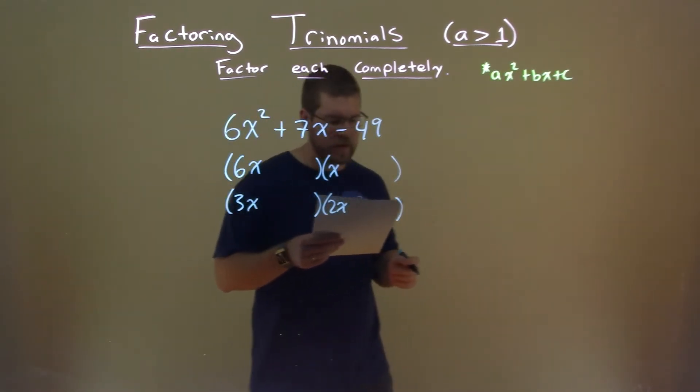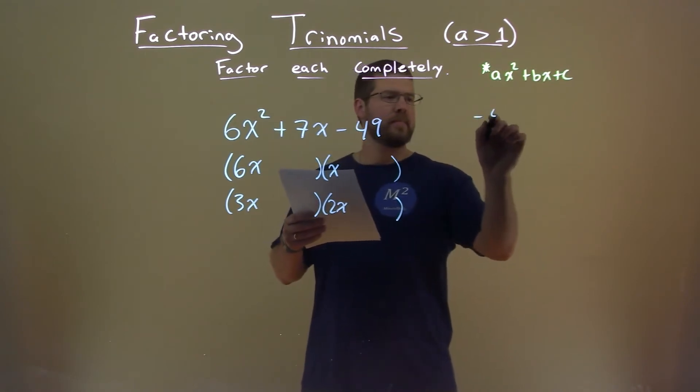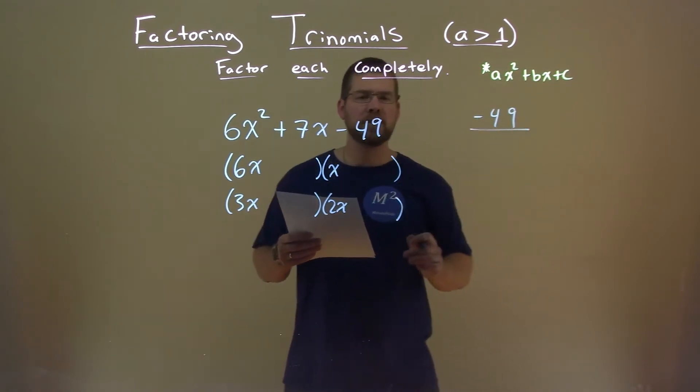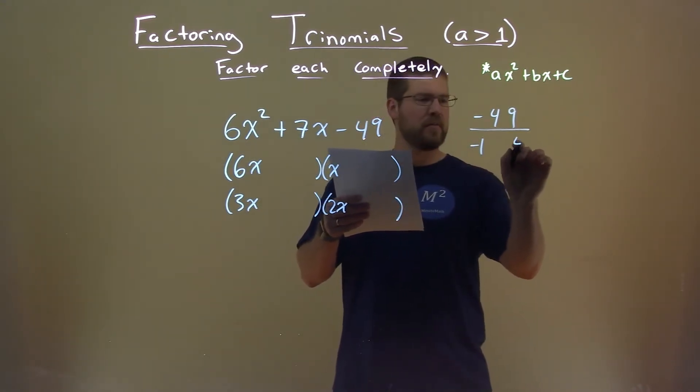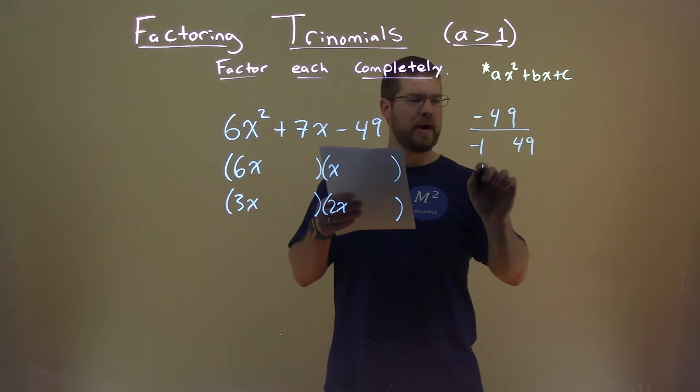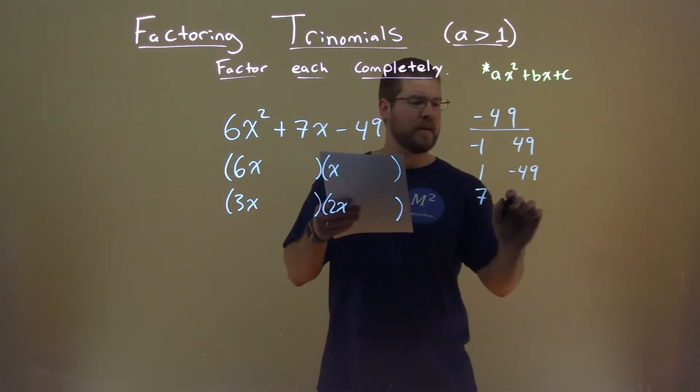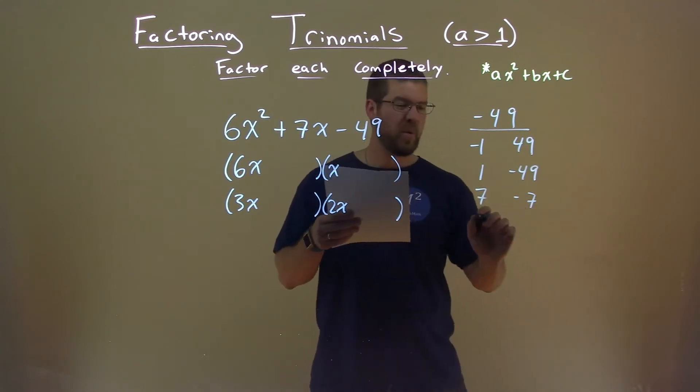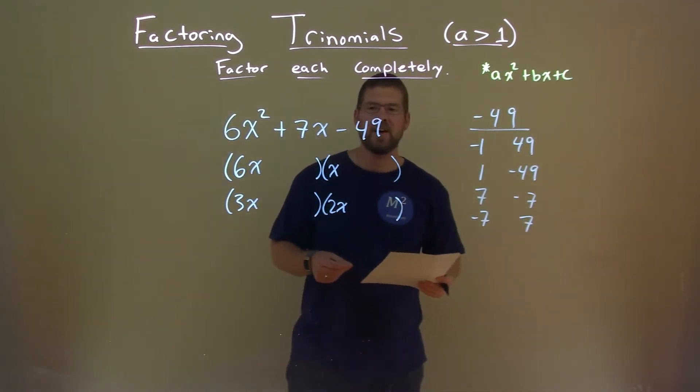Now let's look at negative 49. So we have negative 49 right here, and we think, okay, what two numbers multiply to be negative 49? Well, that's either negative 1 and positive 49, positive 1 and negative 49, 7 and negative 7, or negative 7 and positive 7.